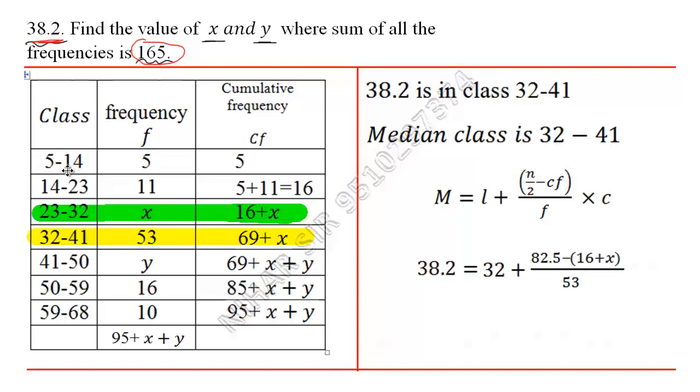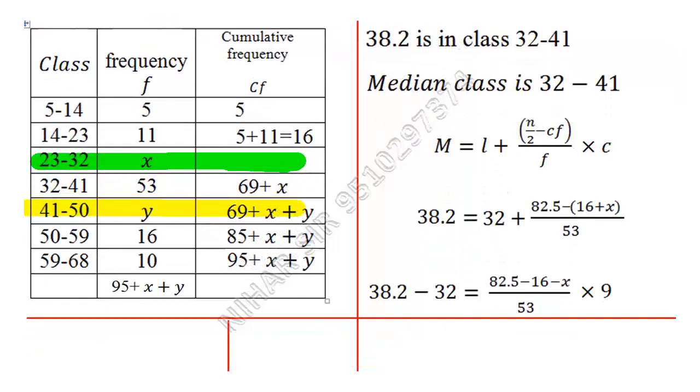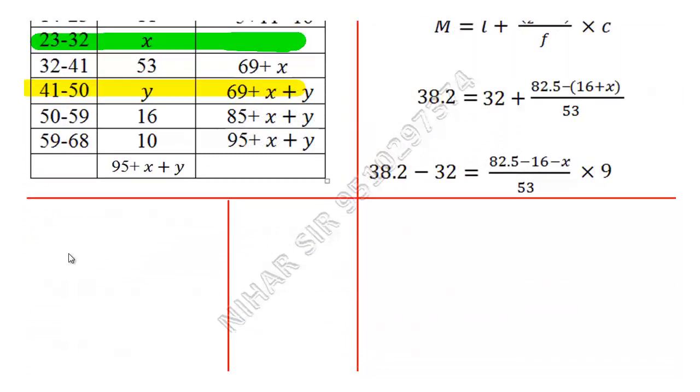Now let's further simplify this. I took this 32 over here, so 38.2 minus 32. Here I will leave the bracket, so minus 16 minus x. This minus will change the sign upon 53 into 9. This will be 6.2 equals 66.5 minus x upon 53 into 9.